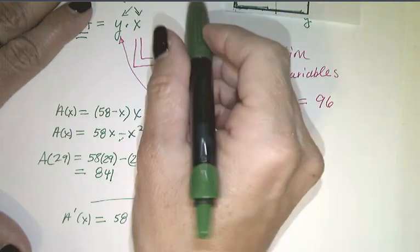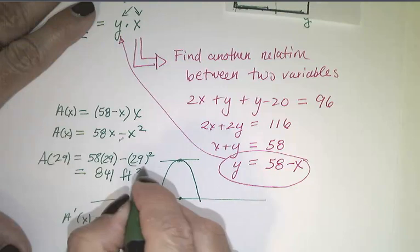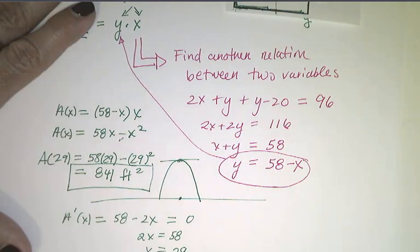Let's make sure our units are correct. We had feet. So, squared feet. So, the maximum area of this rectangle is 841 square feet.